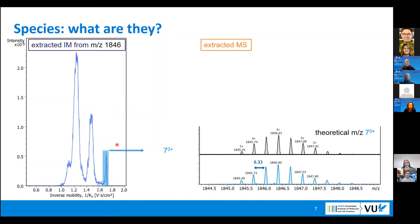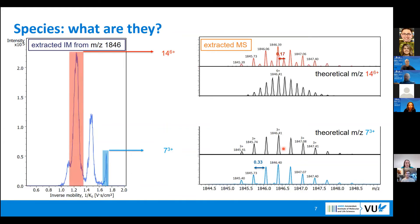What are they? For that, we extract mass spectrum from mobility. We have a mass spectrum with the distance between the peaks and isotopic distribution corresponding to triply charged ions. We know that it also corresponds well to the theoretical isotopic distribution, so this is 7³⁺ oligomer.